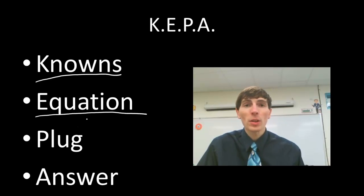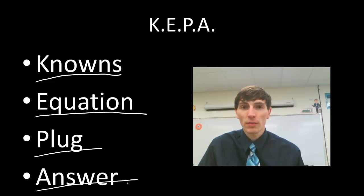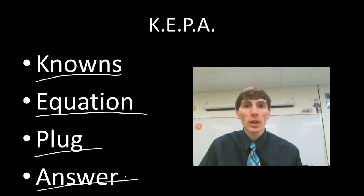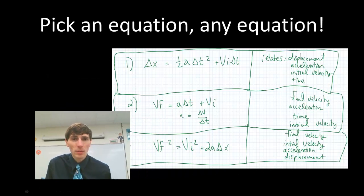Once we have some information, we're going to take those knowns and unknowns and find an equation that relates them all. Once we have an equation, we can rearrange it, and then we can solve for our unknown by plugging in the values of our knowns, solving for our unknown, and getting our final answer. Let's go through a couple problems, but first we need to look at those three equations we'll be using.